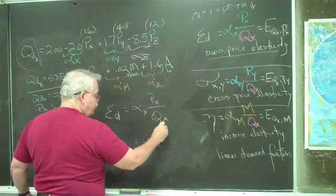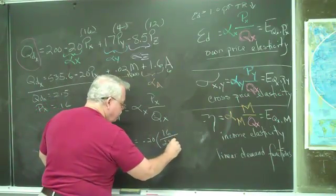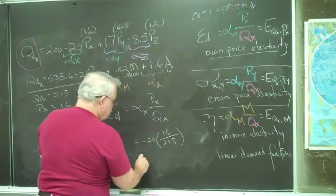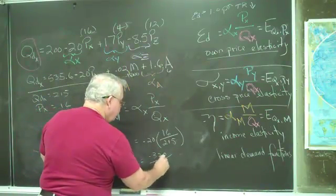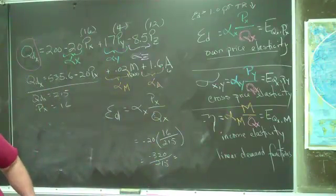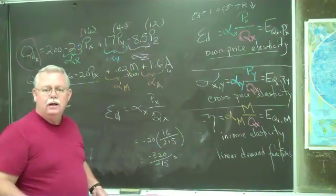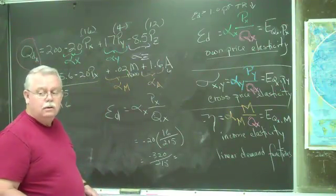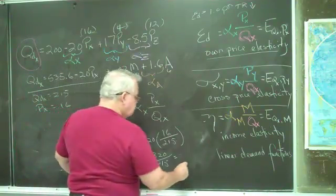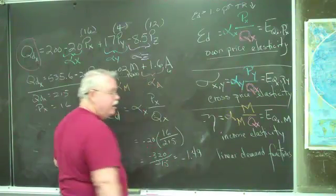The price of X is 16, and at that price we're selling — I'll round it off — 215 units. That's negative 320 over 215. What do you get? Negative 1.49. It is a negative — I rounded it up. Negative 1.49.